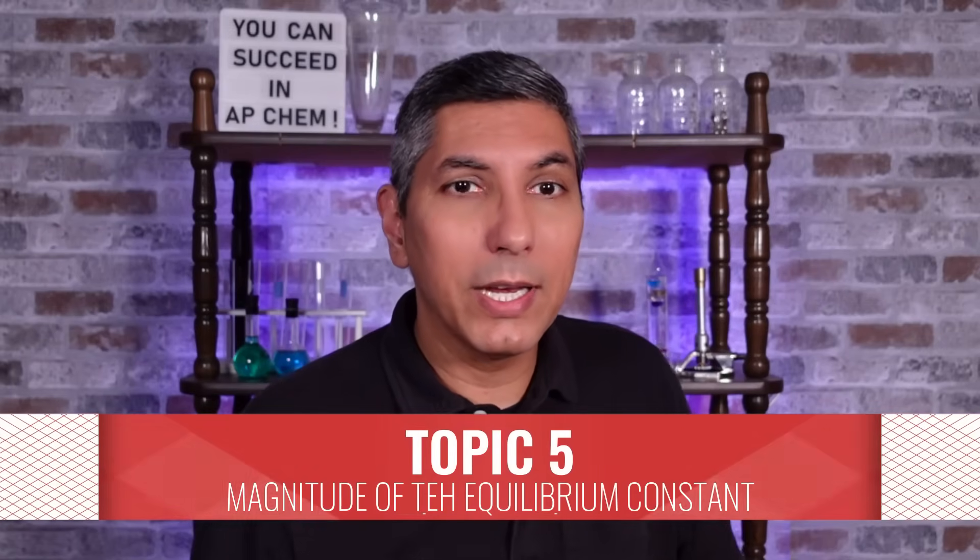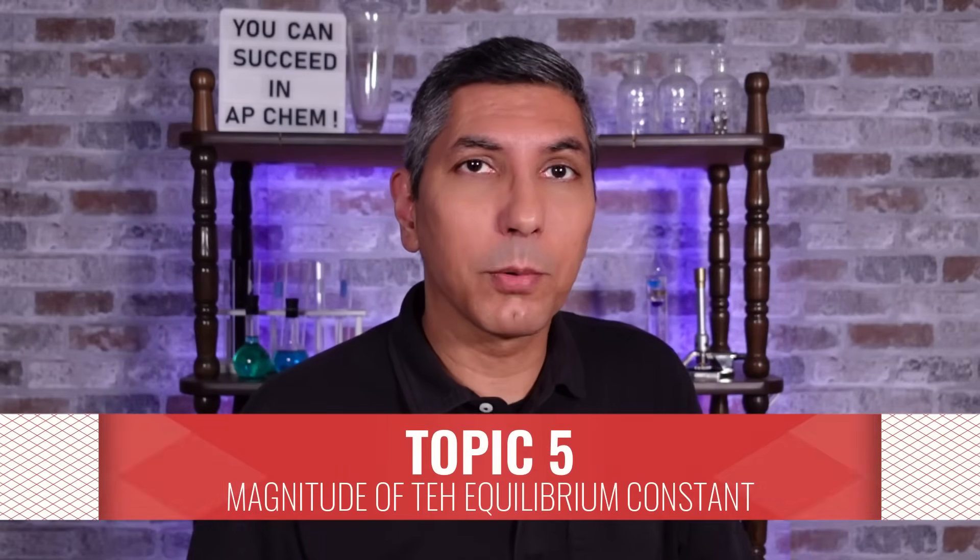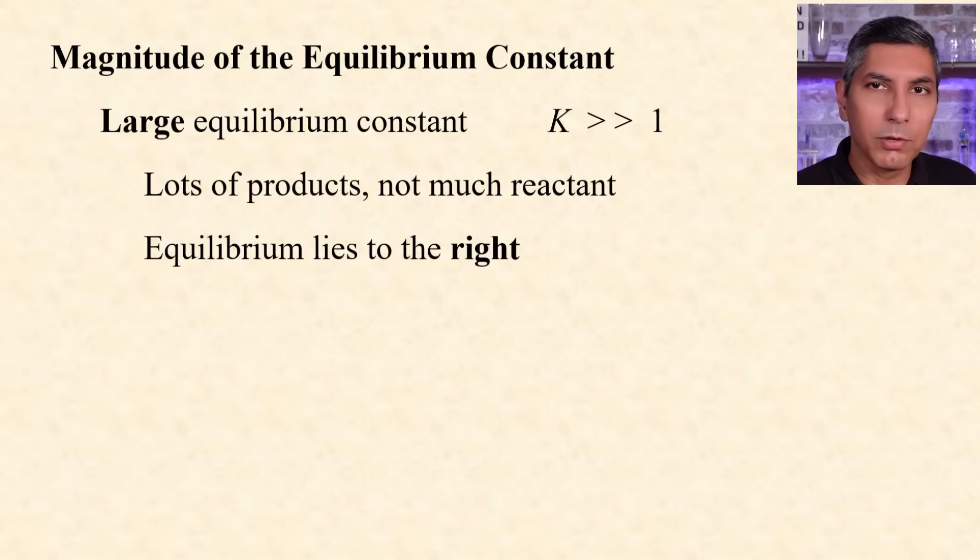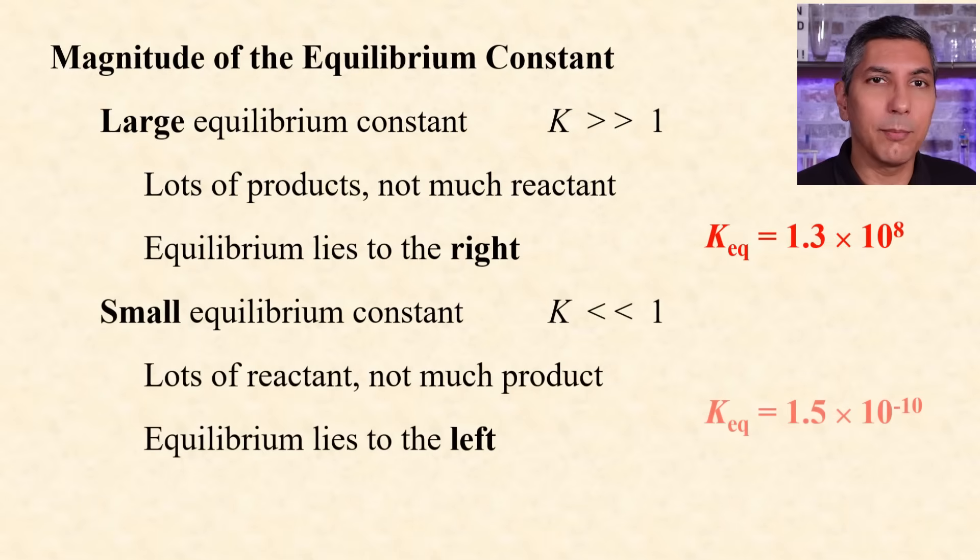The magnitude of the equilibrium constant tells us to what extent a reversible reaction takes place. A very large equilibrium constant, like we see here, tells us that we're going to have almost 100% of the reactants converted into products. We'd say equilibrium lies to the right, or favors the products. A very small equilibrium constant, like in this example, tells us that almost 0% of the reactants convert into products. So we say equilibrium lies to the left, or that it favors the reactants.